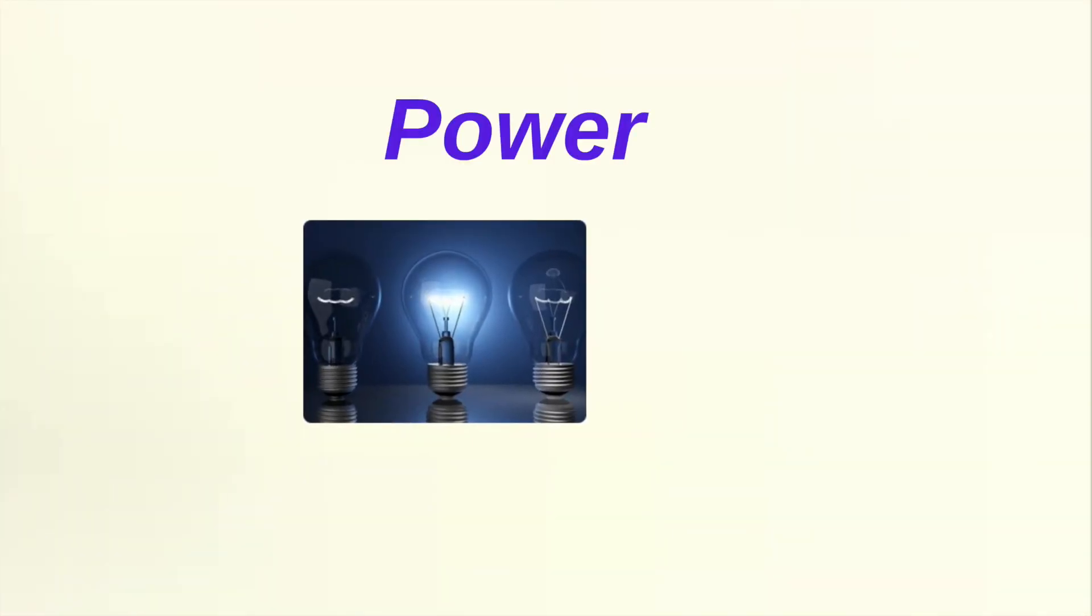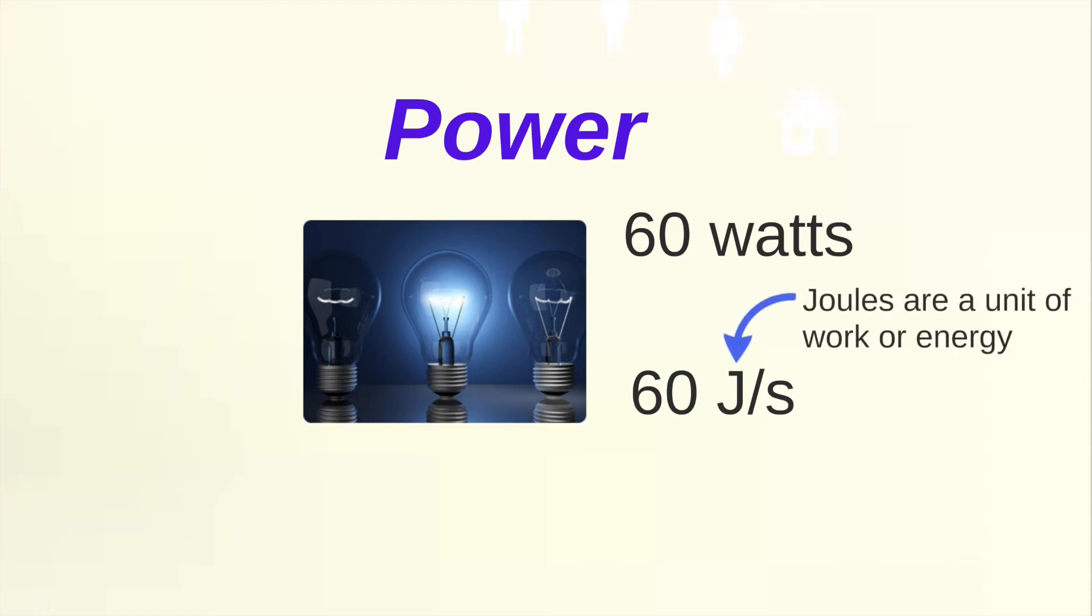Power gets a little more abstract. A light bulb could dissipate 60 watts of power. What's a watt? A watt is a joule per second. So a light bulb dissipates 60 joules per second of power. What is a joule? A joule is a unit of work, or energy. So that means that power comes in units of energy per time.